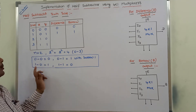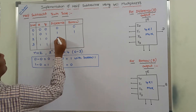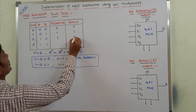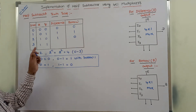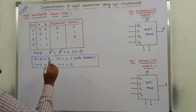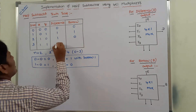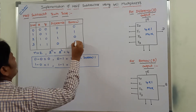1 minus 0 is nothing but 1, and borrow is 0. Next, 1 minus 1: difference is 0 and borrow is 0.